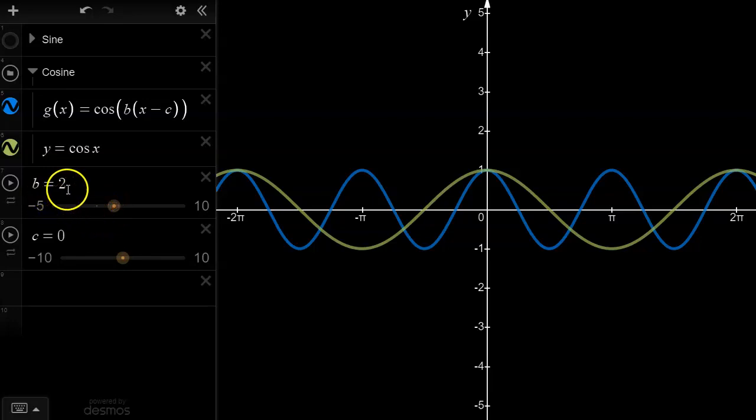So again, b is equal to 2. So from 0 to 2 pi, I can fit one cycle and another cycle, two cycles of cosine 2x.